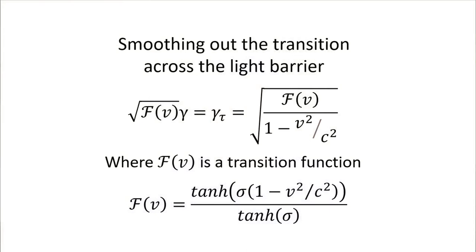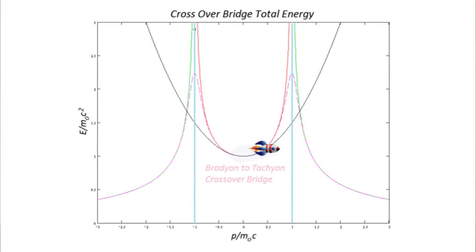In episode one, I talked about a possible way to smoothly transition the light barrier and travel at faster-than-light speed. As a brief review: the equation I developed includes the Lorentz gamma factor, classically developed by Einstein, multiplied by the square root of the transition function F(V). This transition function allows smooth travel up to the speed of light, crossing the light barrier and continuing at faster-than-light speed. It is a hyperbolic equation, and sigma is the temporal coefficient determining the transition rate from sublight to superluminal speed.